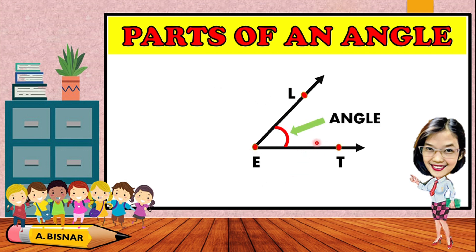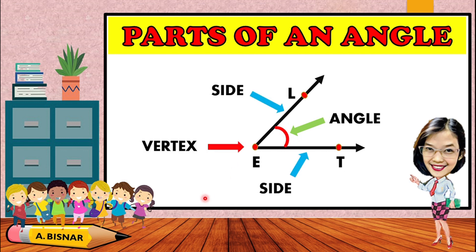The third part is the angle itself — this is how wide it opens from the first side to the second side. Later we will learn how to measure angles and the names of the different kinds. So remember: the parts of an angle are the vertex, the sides, and the angle.